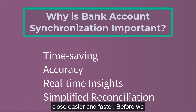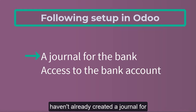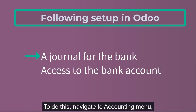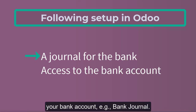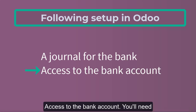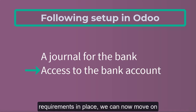Before we dive into the actual connection process, make sure you have the following setup in Odoo. A journal for the bank: if you haven't already created a journal for your bank, you'll need to do that first. To do this, navigate to the Accounting menu, then go to Configuration and select Journals, then click on Create and select the appropriate journal type for your bank account, e.g., Bank Journal. You'll also need access to the credentials for the bank account you want to connect.